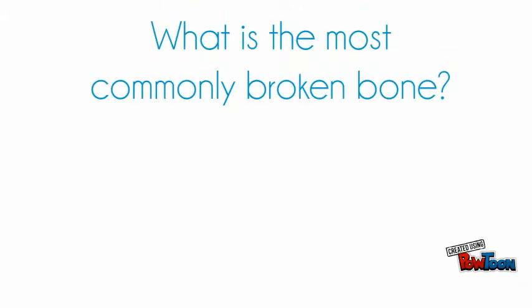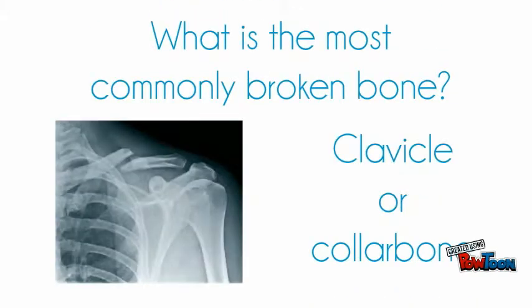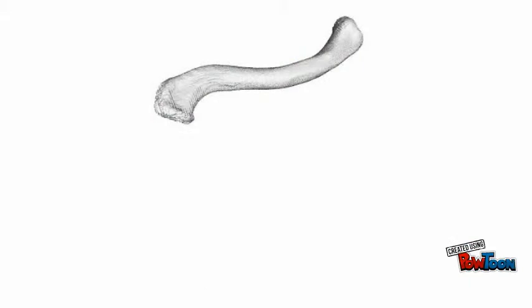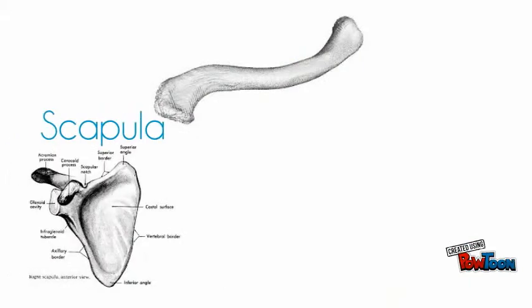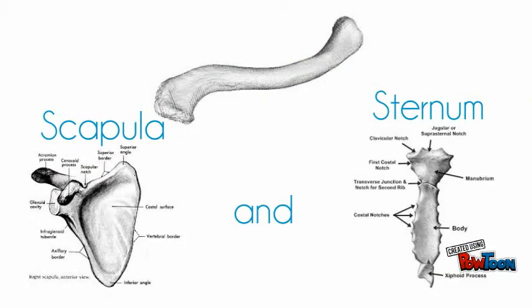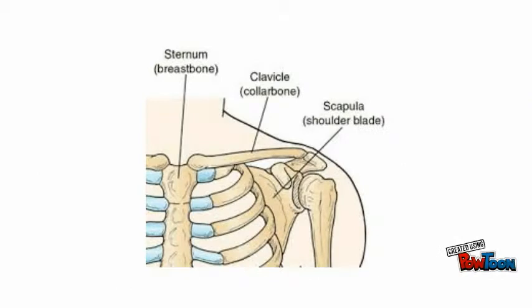What is the most commonly broken bone? That bone is the clavicle, or collar bone. It is a long slender bone that connects the scapula, or shoulder blade, and the sternum. Its main purpose is to keep the scapula in place so that the arm can hang freely.